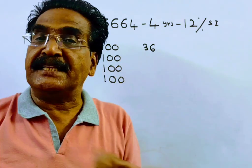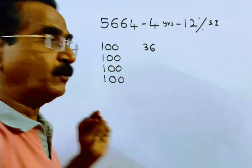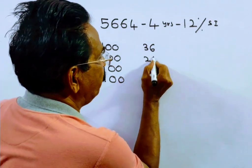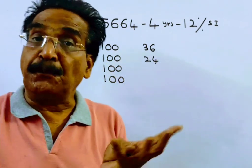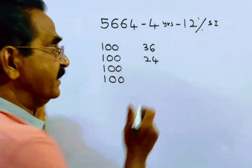And the installment you pay at the end of the second year will fetch interest for the remaining 2 years, 24 rupees. And the installment you pay at the end of the third year will fetch interest for 1 year, that is 12 rupees.